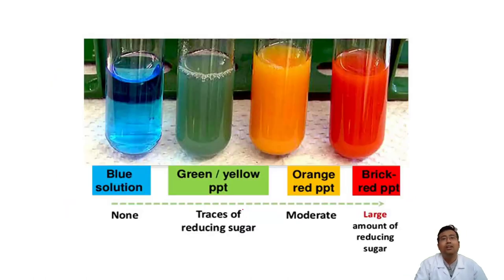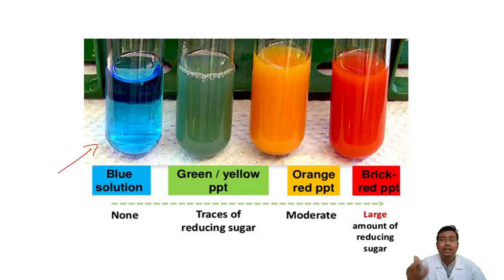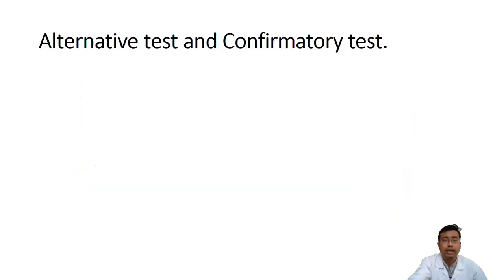This is how it looks in the real world. Benedict's solution is blue in colour, and as you start heating, depending on the amount of reducing substances, the colour changes from green to yellow to orange to red.